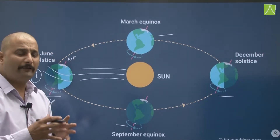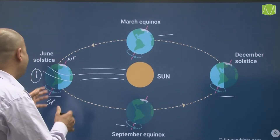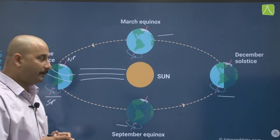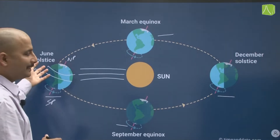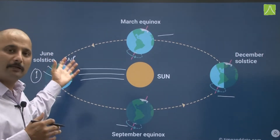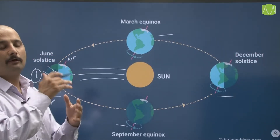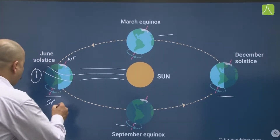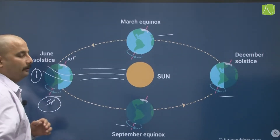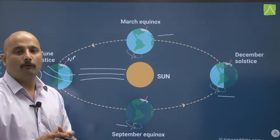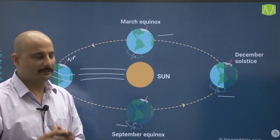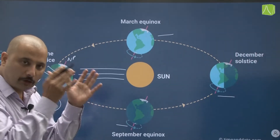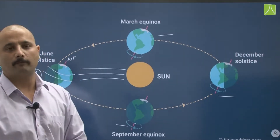During 21st June, the June solstice is witnessed in the northern hemisphere — that is, summer solstice is witnessed in the northern hemisphere. Similarly, for the southern hemisphere it will be winter solstice, because the south pole is away from the sun.